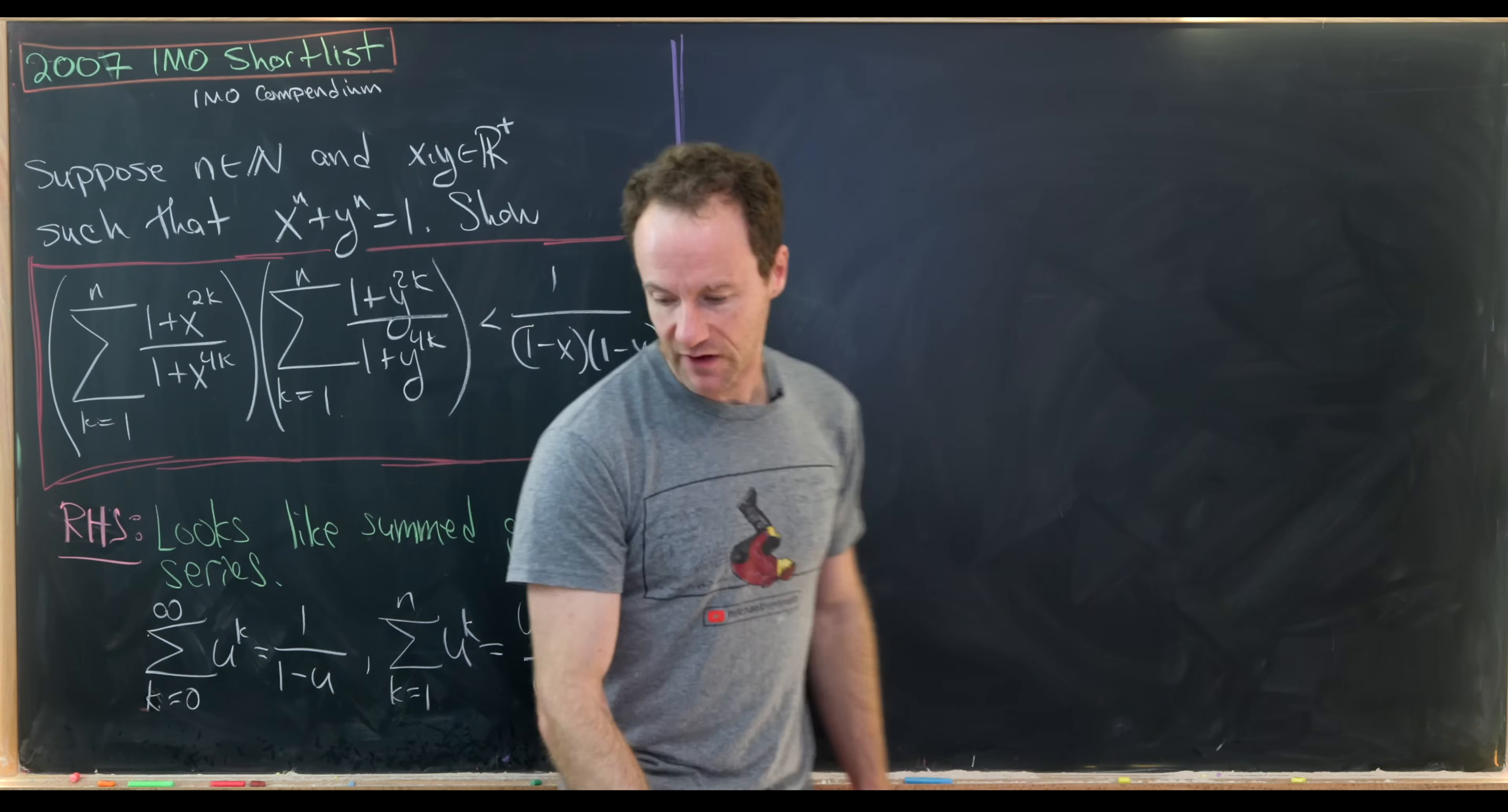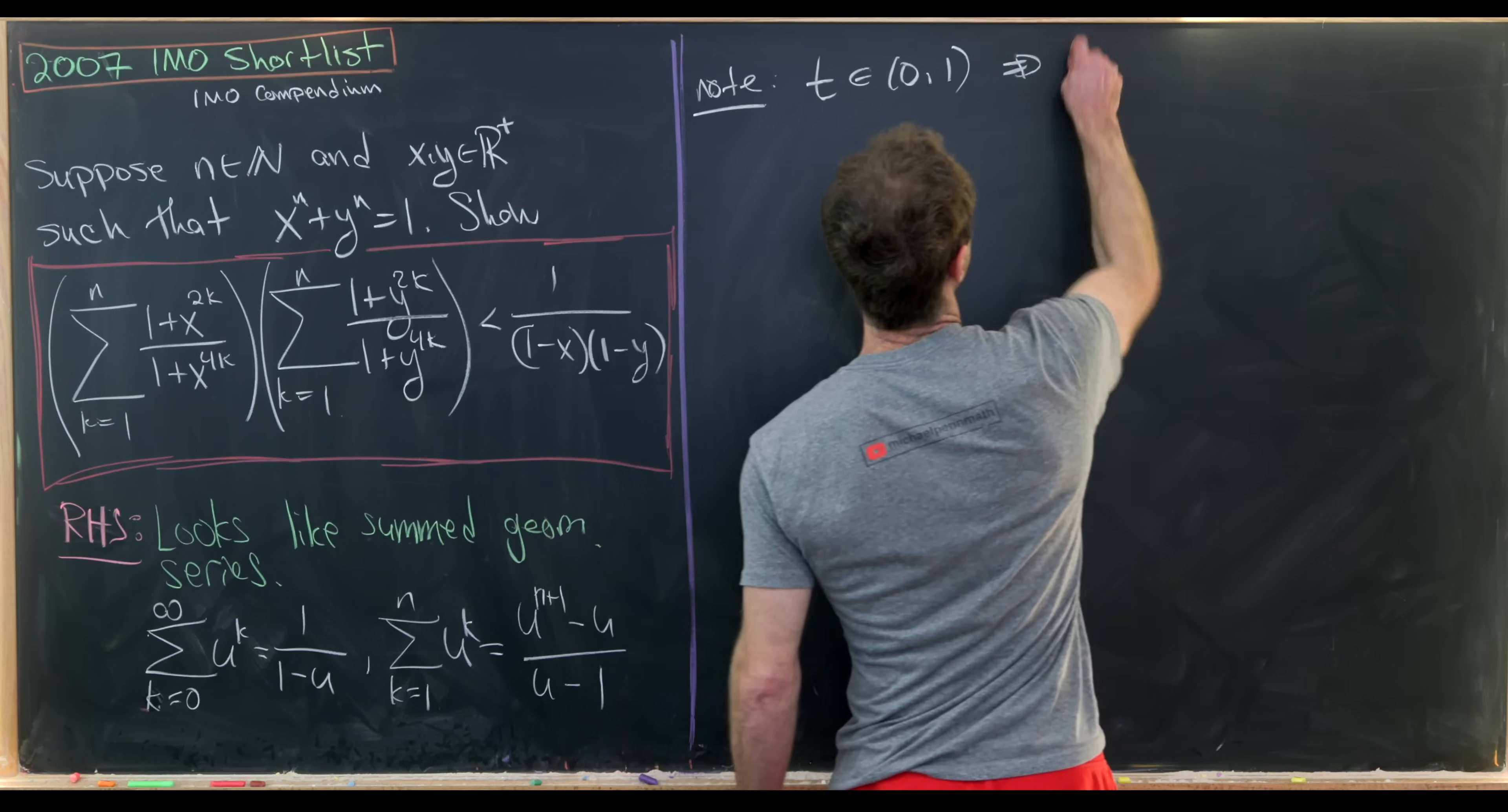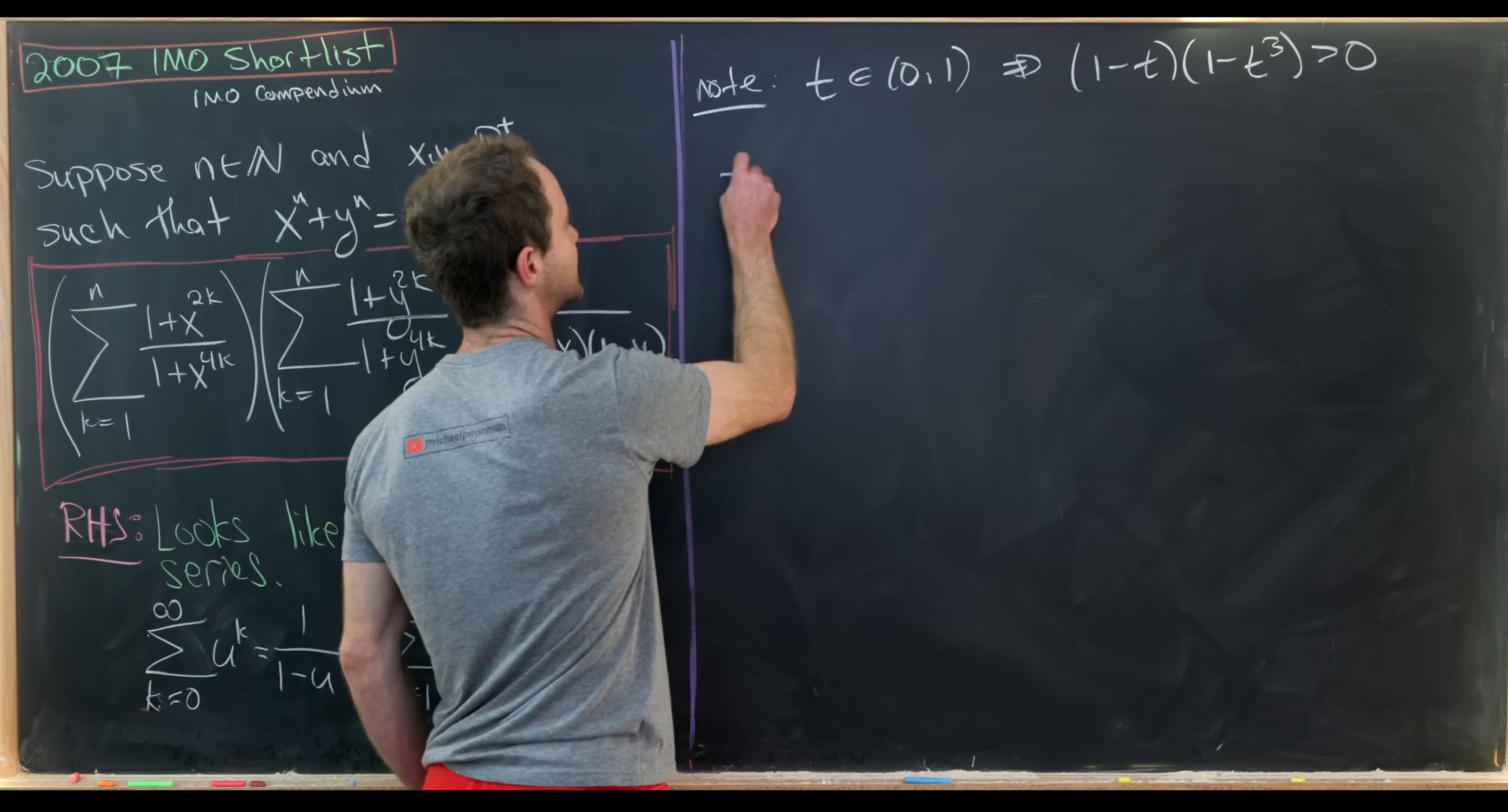Okay, so let's maybe see how this might go. So let's note for t on the interval from 0 to 1, not including 0 and not including 1, we have the expression (1 minus t) times (1 minus t cubed) is bigger than 0. So that's pretty clear, I think. Okay, well, let's expand this out and see what we get.